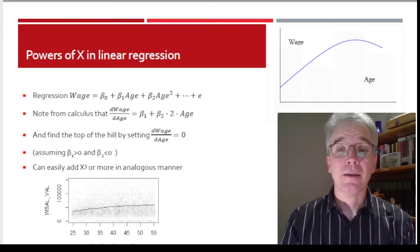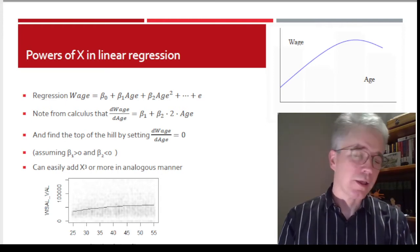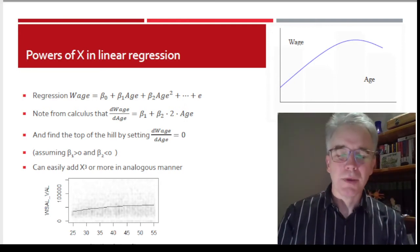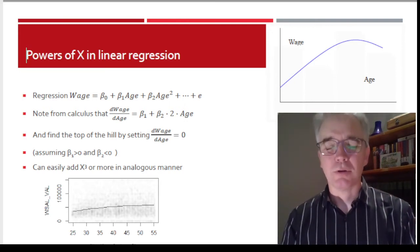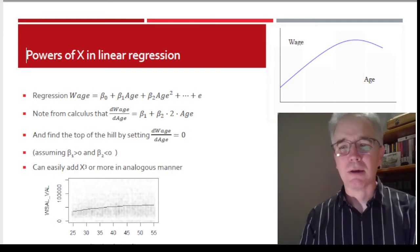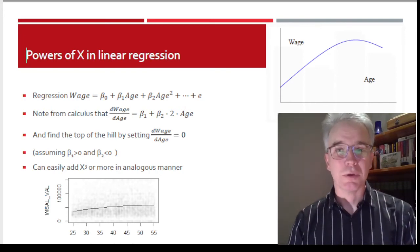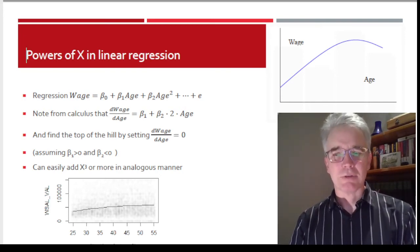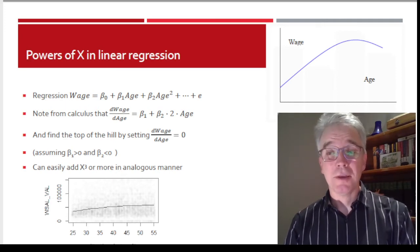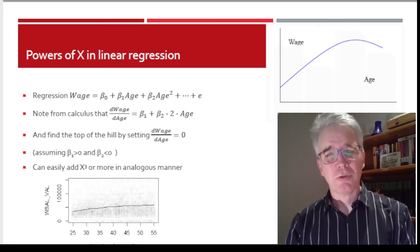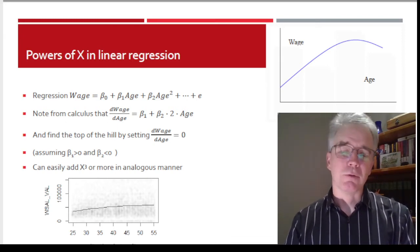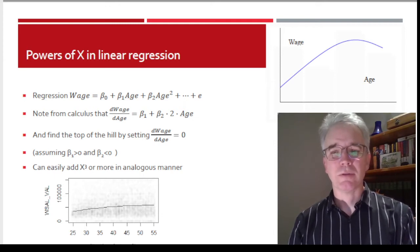You can add X cubed, you can add X fourth, you can add higher order polynomial terms as much as you want, just don't try to go crazy. If you read the literature, there are debates about how many higher order terms you really want. There's kind of a limit. There are people who will go to the mat for age cubed and age to the fourth. You don't usually ever see anything beyond that.